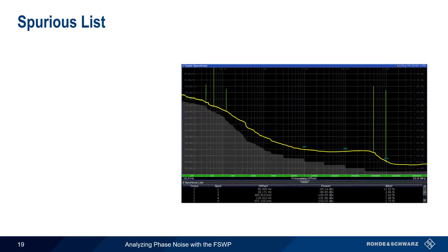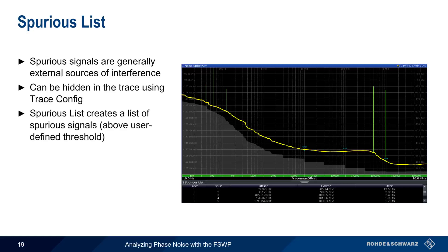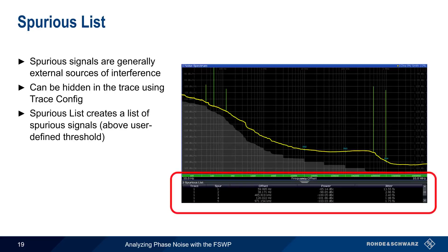Spurious signals are external sources of noise that cause peaks or spikes in the phase noise trace, and we showed how these could be hidden using the Trace Config menu. The spurious list measurement, on the other hand, creates a list of spurs above a user-defined threshold. The results are reported per spur and include the offset frequency and power of the spur, as well as the measured jitter.